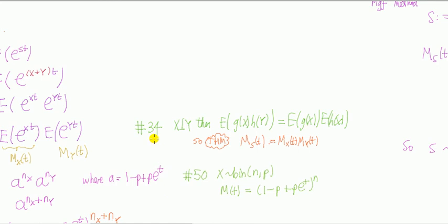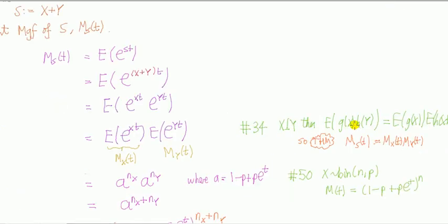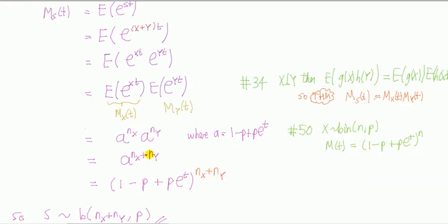Going from this third line to fourth line holds because we've used the result from problem 34, which was solved, that if we have two random variables, x and y, then the expected value of a function of x times a function of y is equal to the product of the expectation of the functions. And again, we've just shown that theorem. We've proved this theorem. Now, if we knew this theorem already, I don't have to write all those lines out. I can just jump straight to this one.